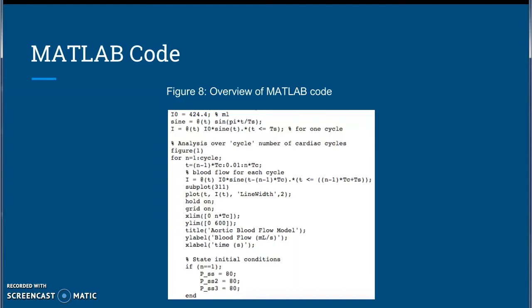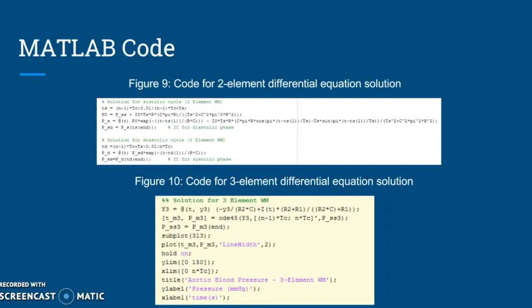After deriving the transfer functions by hand for the two-element and three-element models, the respective differential equations were solved and put into MATLAB in order to graph the results. All parameters used in the code were mentioned on the parameter slide. The analysis is for five cardiac cycles. The code works by first determining the input signal of blood flow with respect to time and then plotting that function. The main basis of the code is a for-loop going through each cycle one through five. Since differential equations were used, initial conditions were first stated: the pressure at the beginning of the cycle is 80 mmHg, since that is the value of human blood pressure during the diastole phase.